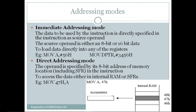Coming to the first one — immediate addressing mode. Here, the data that is to be used by the controller when it executes the instruction is provided directly in the instruction itself. You can see an example: MOV A, #56H. We have already established that whenever a number is preceded with a hash symbol, that number is data. So here, 56H is the data. In MOV A, #56H, 56H is the source operand and A is the destination operand. Whatever is to the left of the comma is the destination operand and whatever is to the right is the source operand — meaning data is copied from source to destination.